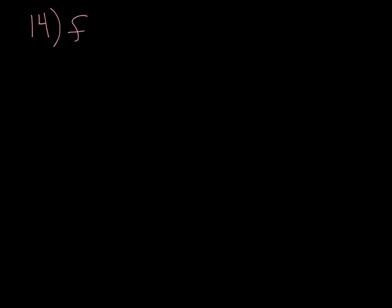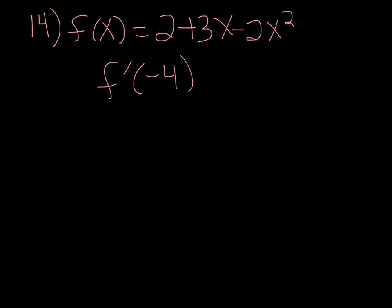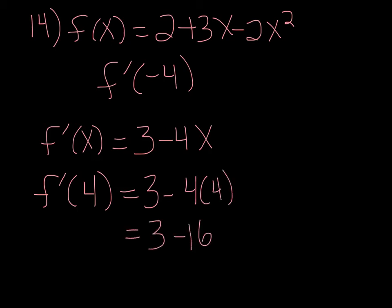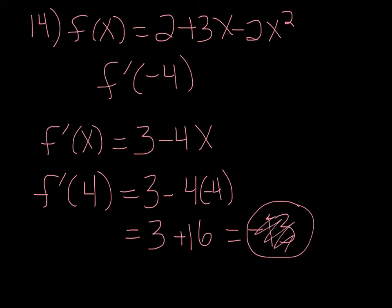Number 14: f of x equals 2 plus 3x minus 2x squared. Find f prime of negative 4. The derivative: the derivative of 2 is 0, derivative of 3x is 3, derivative of negative 2x squared is minus 4x. So f prime of x equals 3 minus 4x. Plugging in negative 4: 3 minus 4 times (negative 4) equals 3 plus 16, which is 19.